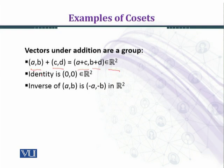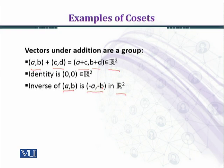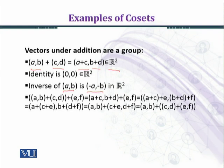Now we check the inverse law. We choose an arbitrary element (a, b) in R². The ordered pair (-a, -b) is the inverse of (a, b), because when we add these two elements we get the ordered pair (0, 0). Just as in real numbers we have additive inverse -a, we shall pick arbitrary three ordered pairs and prove the associative property.